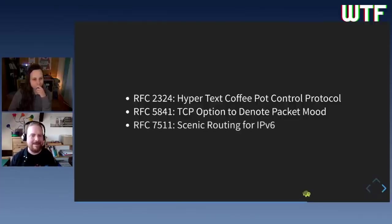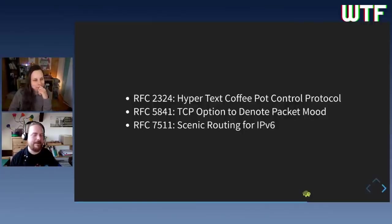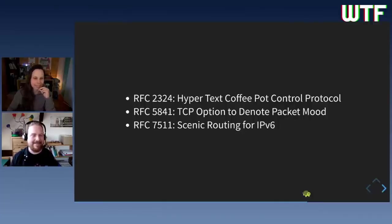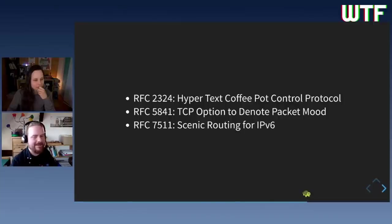There's also RFC 'Scenic Routing for IPv6,' which suggests that traffic should be sent over very nice pathways — along a nice landscape with lots of fresh air — and prioritizes wireless communication channels to give data a scenic route to its destination. You'll find a Wikipedia article with a list of April Fools RFCs; there are several dozen of them to check out.